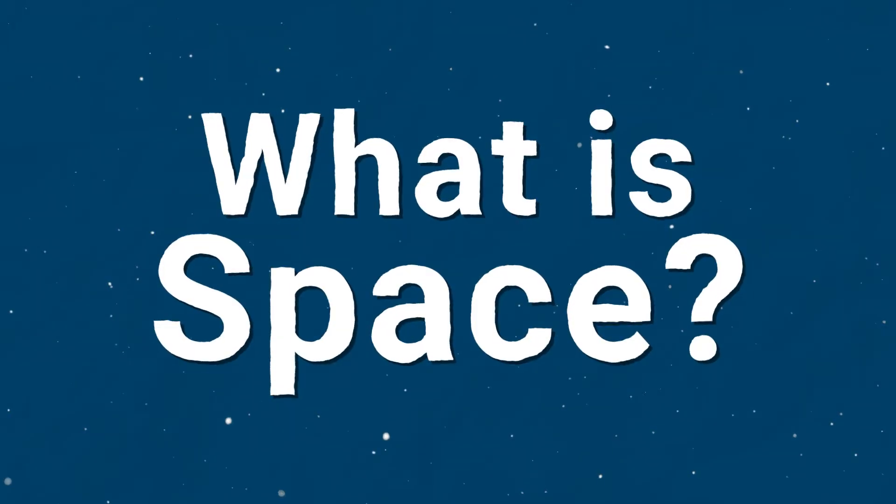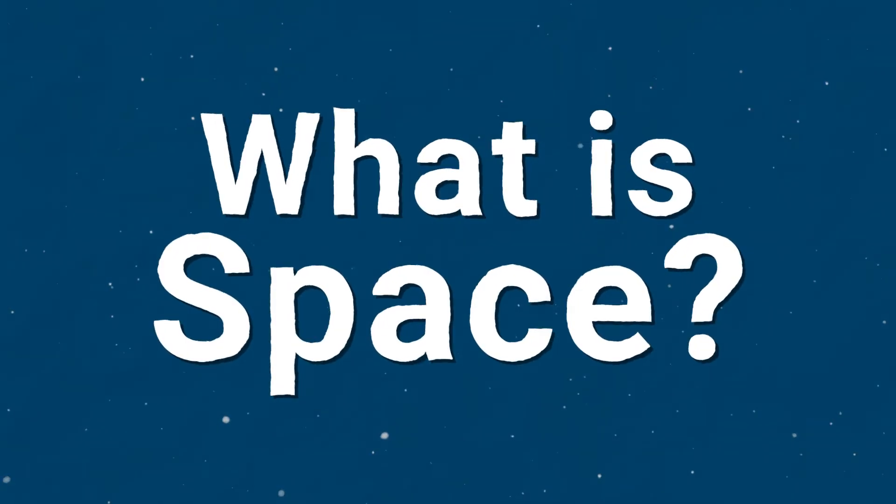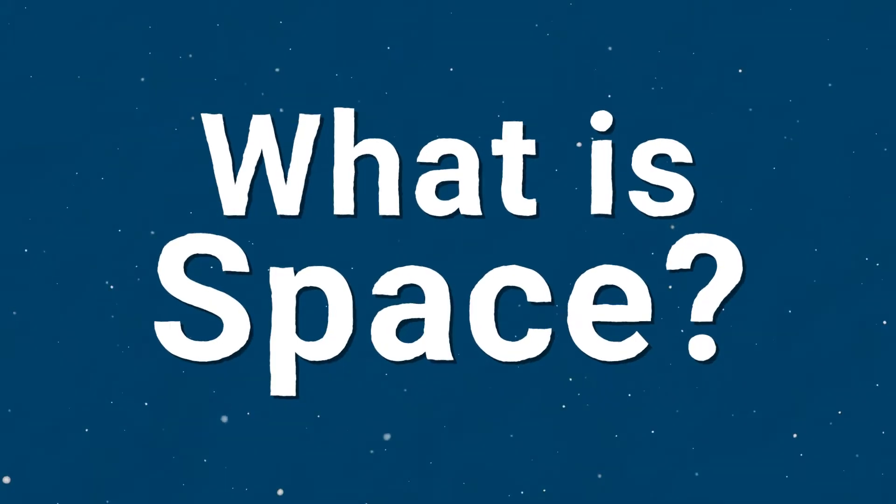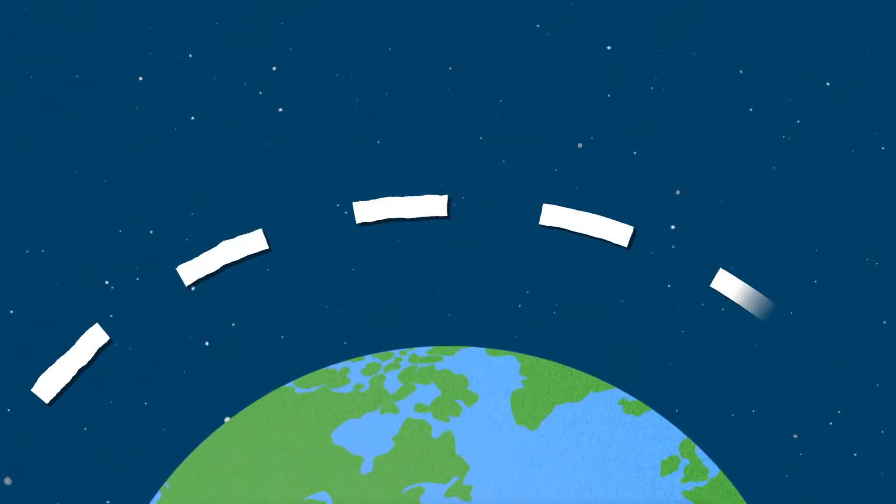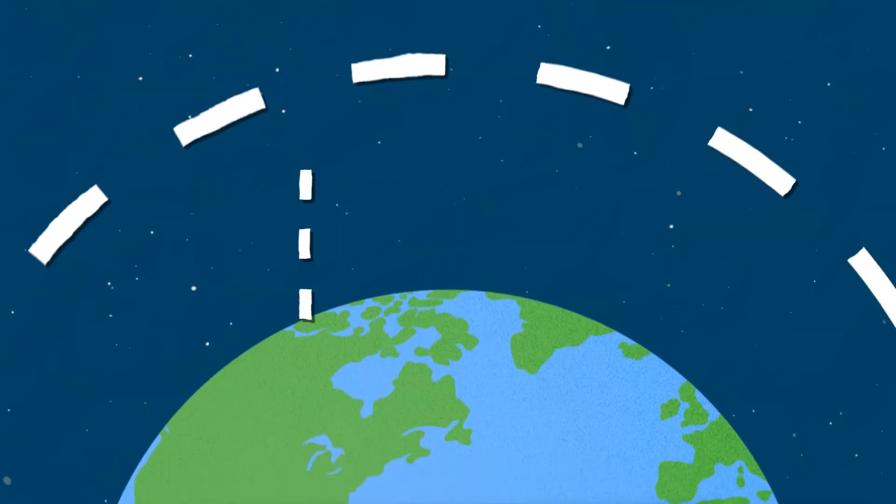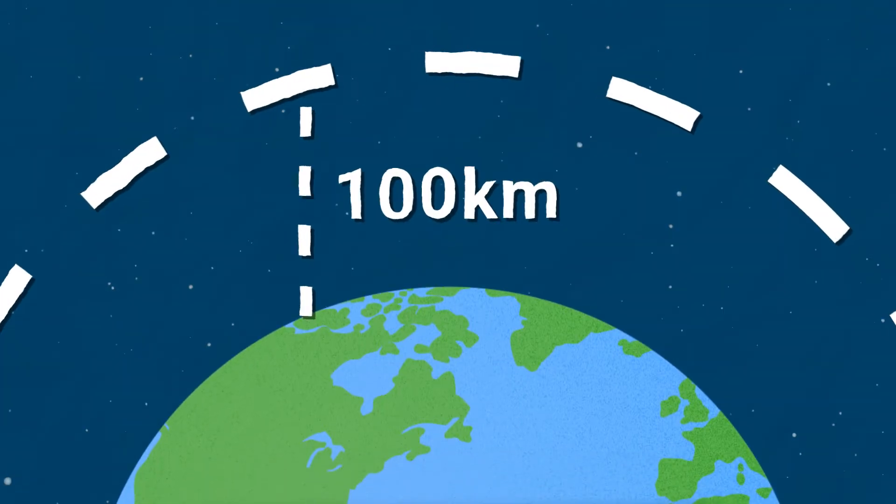If we're going to be talking about how rockets get to space, we should determine what exactly space means. For most purposes, the difference between Earth's atmosphere and outer space is marked by the Kármán line, which begins roughly 100 kilometres above mean sea level.